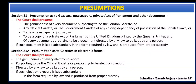Section 81 discusses about presumption as to gazettes, newspapers, private acts of parliament and other documents. It says any official gazettes, newspapers, journals, or copies of the acts of parliament are to be presumed to be genuine. However, in the case law State of Rajasthan versus Union of India, it was held by the Supreme Court that news reports do not constitute admissible evidence of their truth. That is one particular aspect you need to remember as far as section 81 is concerned.